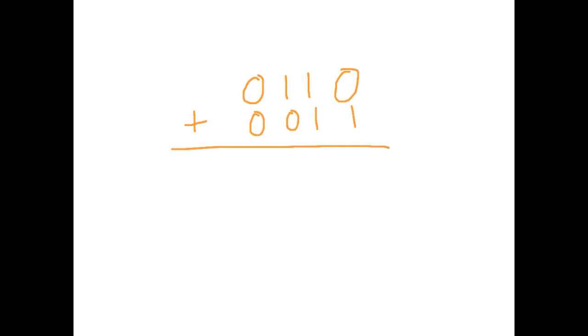So a 0 and a 1 is 1. A 1 and a 1 is 0, carry the 1. We're not adding anything more to that, so we do the 0, carry the 1. 1, 0 and 0 remains a 1.